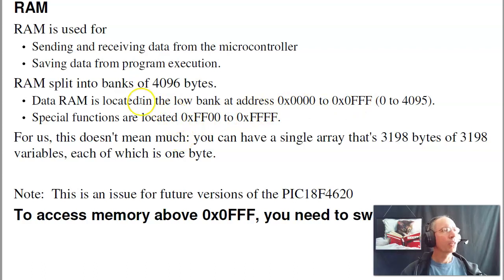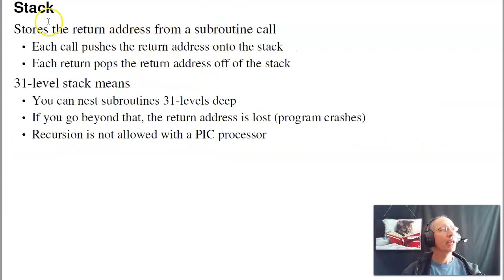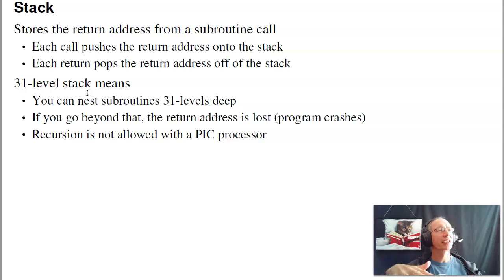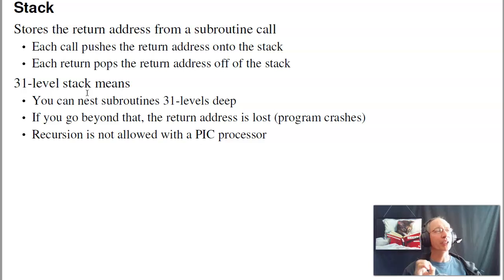The data memory is split into banks. On this version of the processor there's only one bank, so you don't have to worry about it. On future upgrades there might be 2 or 3 banks, which causes a problem with programming — if your data goes between banks, it's a little bit harder to access. The stack on this processor has a 31-level depth, meaning a subroutine can call a subroutine 31 times in a row. When you call a subroutine, it pushes the return address on the stack; when you hit a return statement, it pops that address off. Every call must be matched with a return. If not, the stack is messed up and all the return statements stop working.